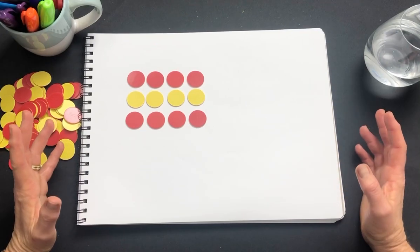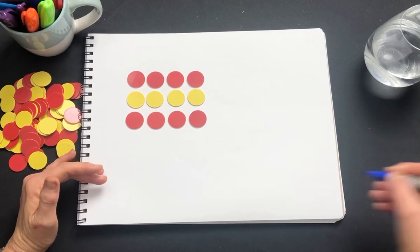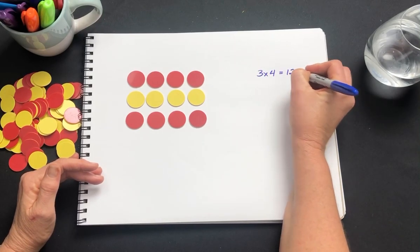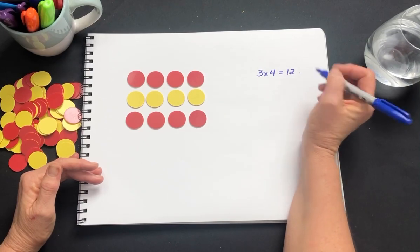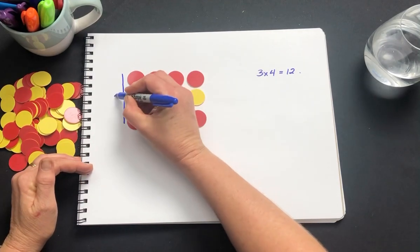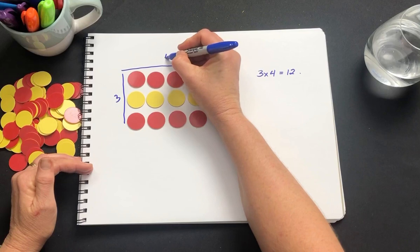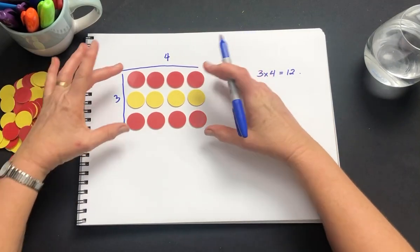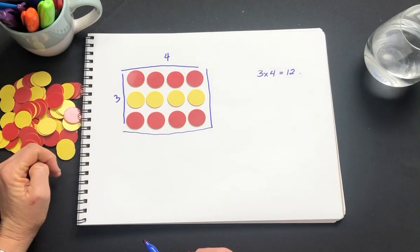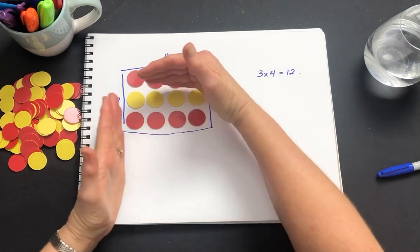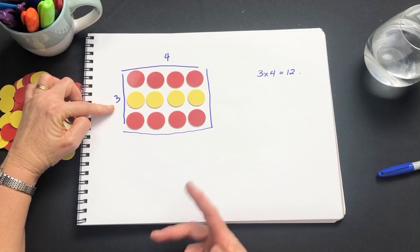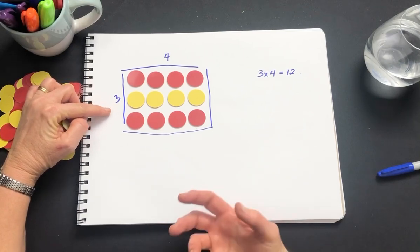Every multiplication can be represented as an array. Here I've represented the multiplication of 3 times 4, 3 rows of 4 to get 12. We can see that the array has a side of 3, another side of 4, and that the total within the array is 12. The sides of the array are the factors, so we know that 3 is a factor of 12 and 4 is a factor of 12.